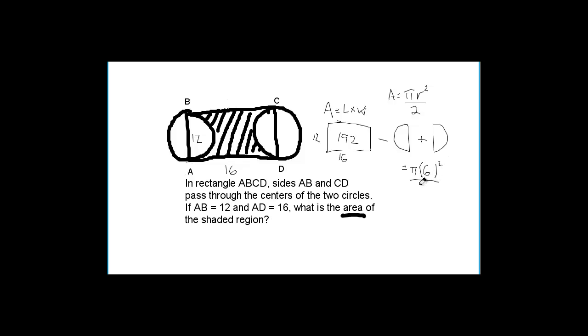That's going to be 36 pi over 2, which is equal to 18 pi. 18 pi is the area of each of these little semicircles.